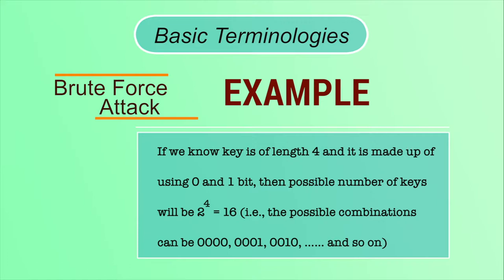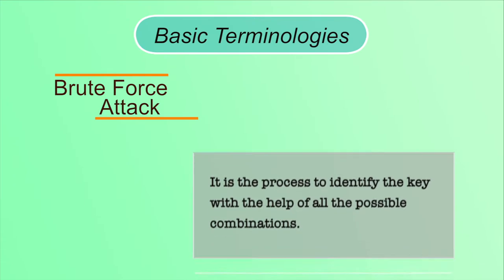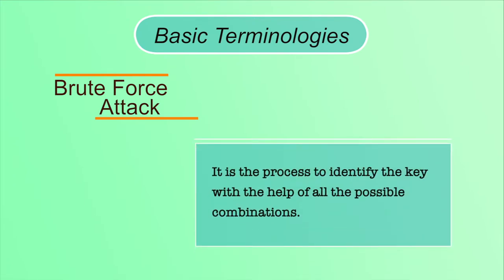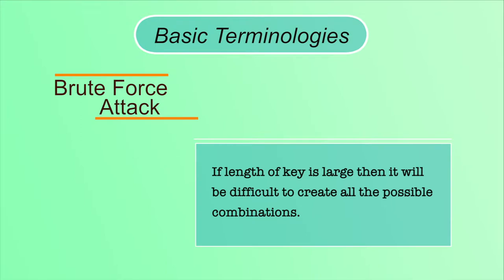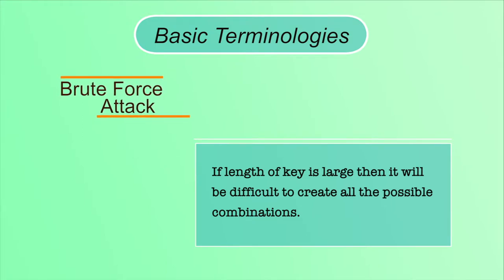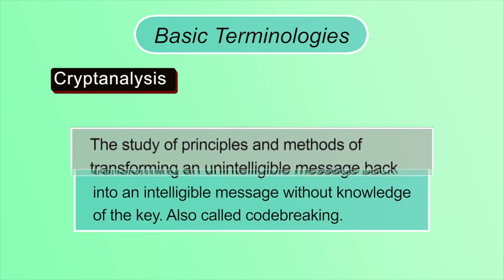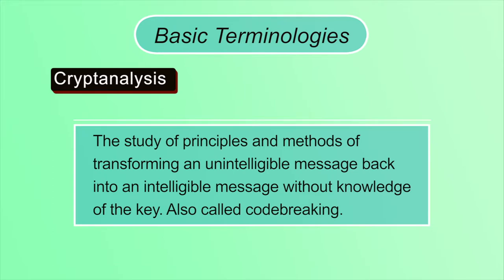The possible combinations include 0000, 0001, 0010, and so on. Brute force is the process of identifying the key using all possible combinations. If the key length is large, it will be difficult to create all possible combinations. Cryptanalysis is the process of converting ciphertext to plaintext without knowledge of the key — it is also known as code breaking. Attackers use this technique to decrypt messages without knowing the key.